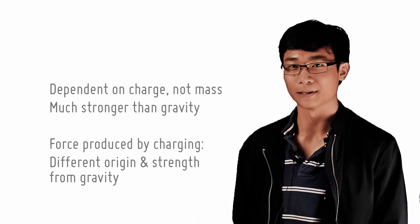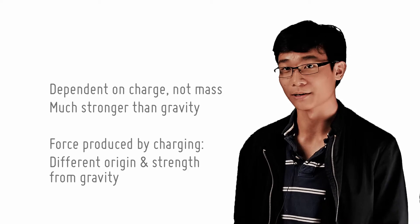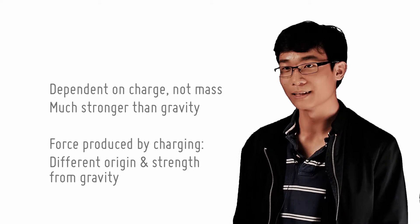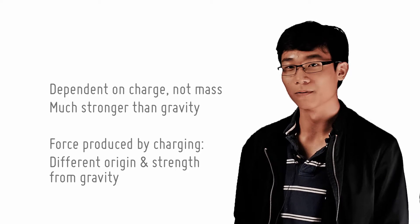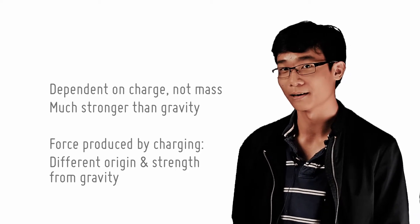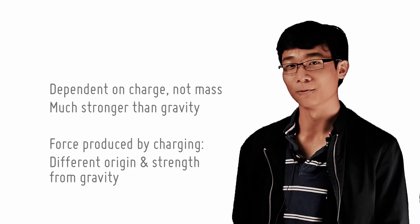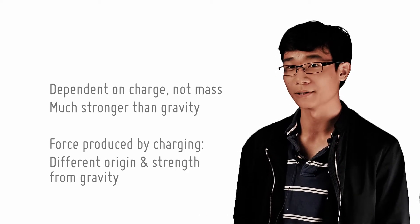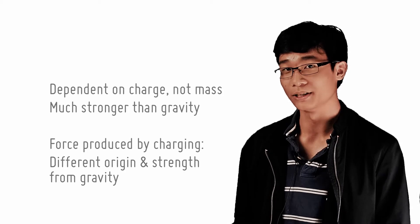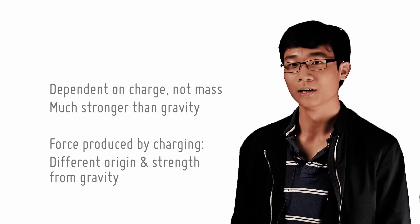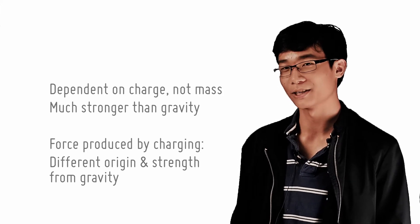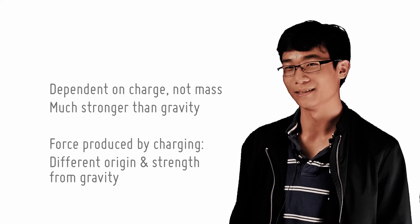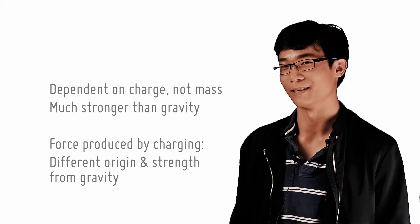We know that these forces are much stronger than gravity because the force from this little bit of charge on this small comb is able to overcome the force of gravity from the entire Earth. So charging an object produces a force that is different in origin and strength from gravity. All this evidence suggests that there is something that you can give some objects by rubbing, called charge, which exerts forces on some nearby objects.